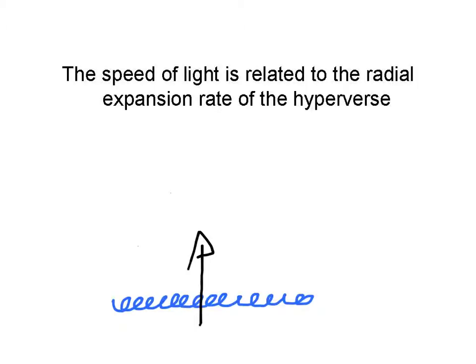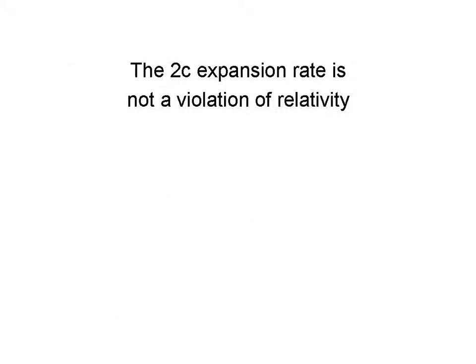Notice too that the speed of light is a function of the rate of radial expansion. Light only moves within the universe, or surface of the hyperverse. We have two radial steps for every step that light takes within the universe. It's two up and one over. The 2c expansion rate is not a violation of relativity. Relativity applies to motion within the universe. What we're talking about here is motion of the entire universe.